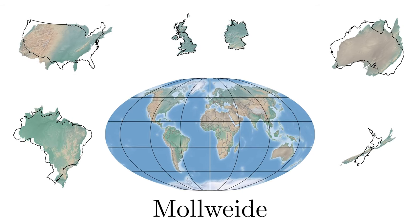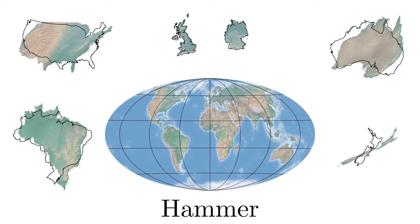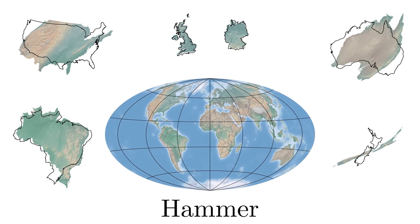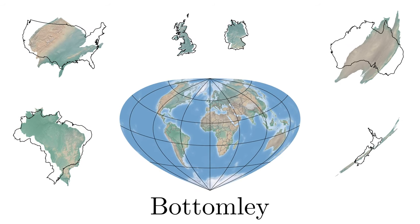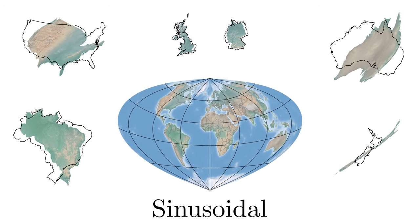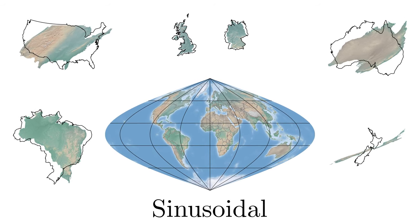Mollweide is a vast improvement over Mercator for most uses. Like Lambert, it shows the true size of countries and continents at the cost of distorting shapes. But this distortion is minimized by projecting onto an oval rather than a rectangle.